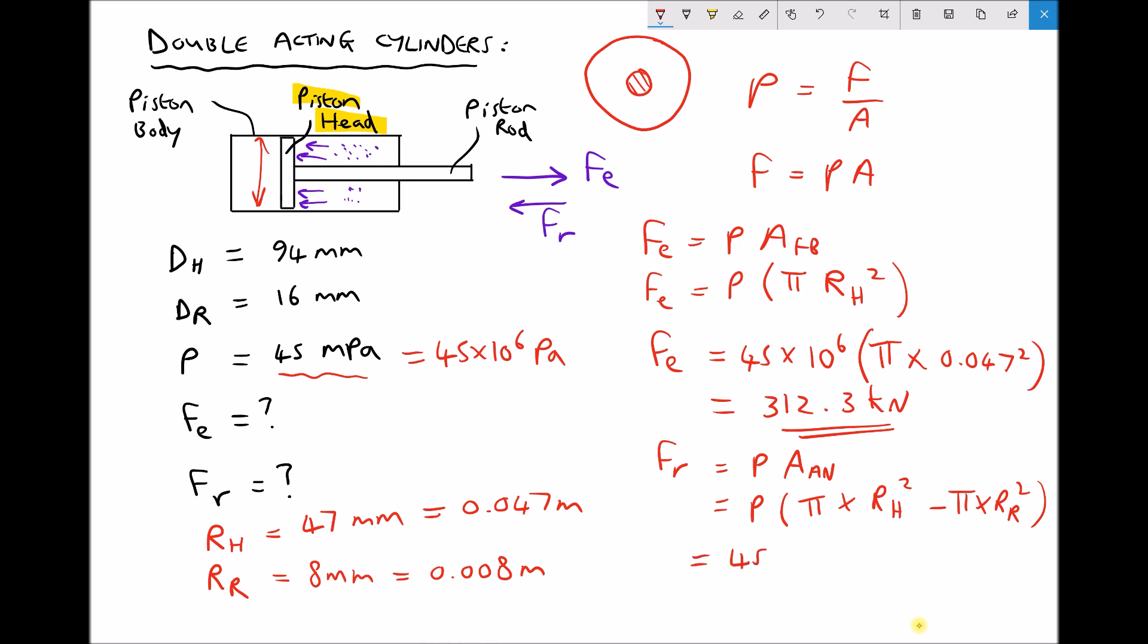Finally, we have 45 × 10⁶ for our pressure. The pressure is the same on extension and retraction. Our area is π times 0.047 squared minus π times the radius of the piston rod, 0.008 squared. Running that through the calculator gives us a force on retraction equal to 303,242, or expressing that in kilonewtons, 303.2 kilonewtons.